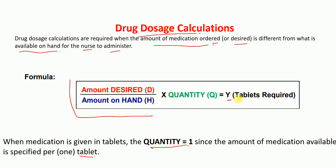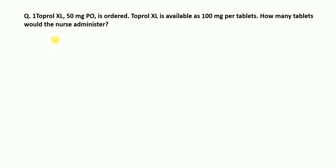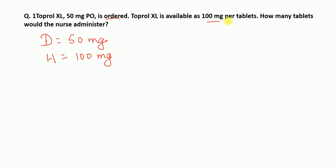Here is the first example question. Toprol XL 50 mg PO is ordered. Toprol XL is available as 100 mg per tablet. How many tablets would the nurse administer? In this question, the amount desired (D) is 50 mg — that is the amount ordered. Toprol XL is available as 100 mg, so the amount on hand (H) equals 100 mg.